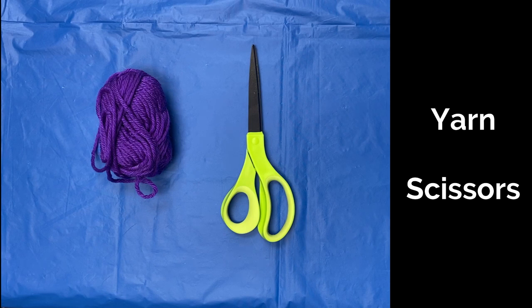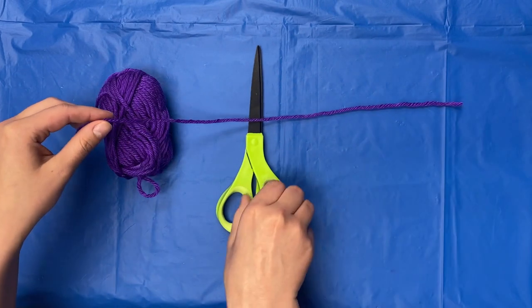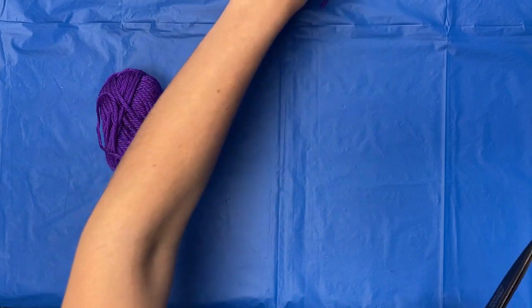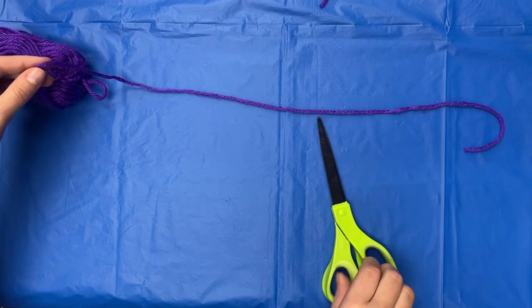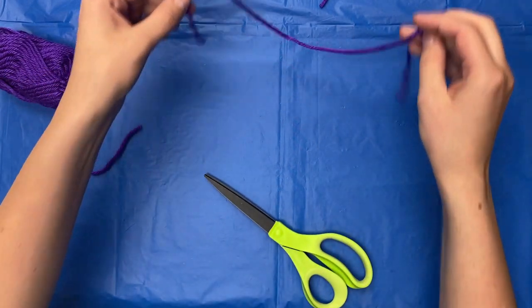You will need yarn and scissors. Cut a piece about eight inches long and set aside. Cut another piece about 15 inches long and set aside as well.